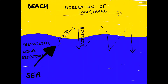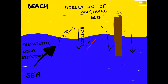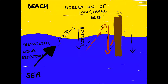A coastal management strategy to prevent longshore drift from taking place is the use of groins. These barriers, usually made of wood or boulders, prevent longshore drift moving sediment down the beach and allow the sediment to build up at the side of the groin, allowing beaches to be made wider.